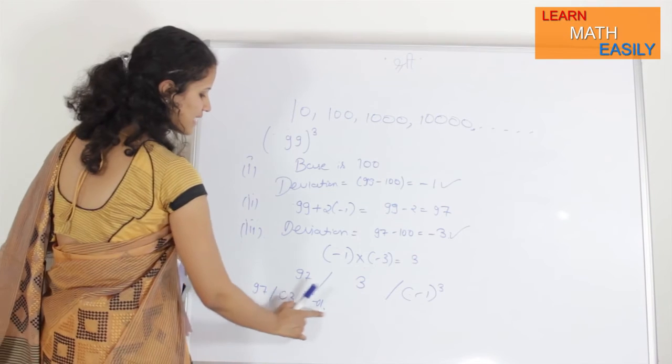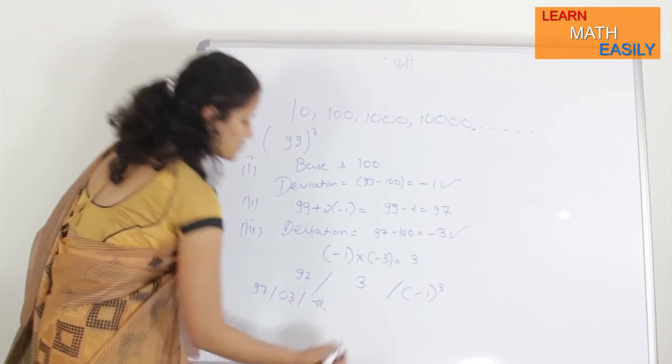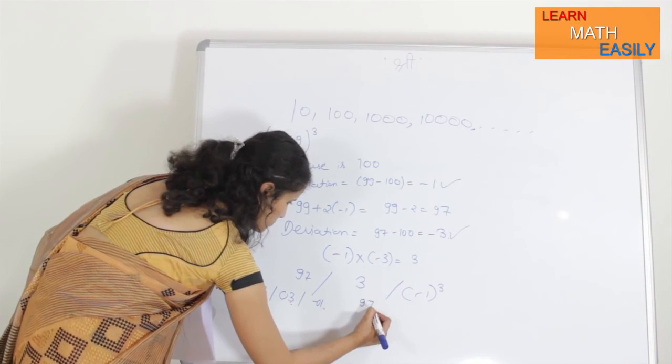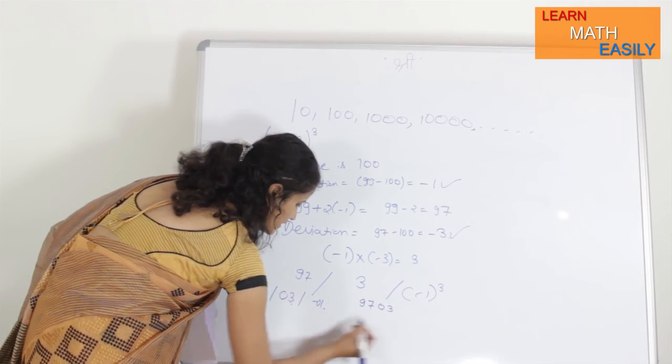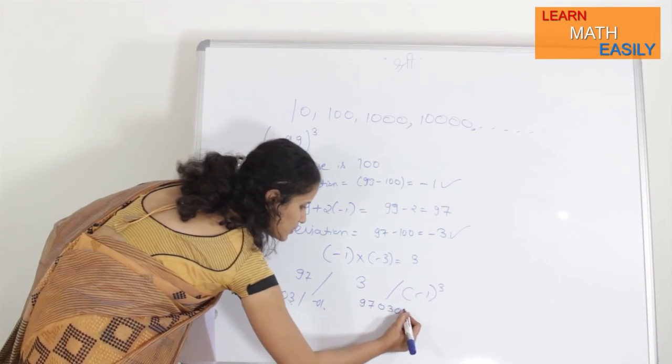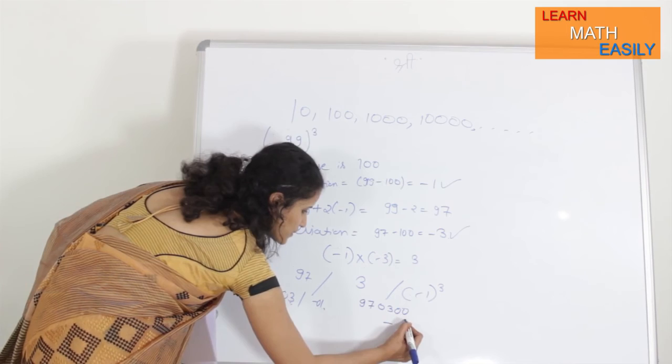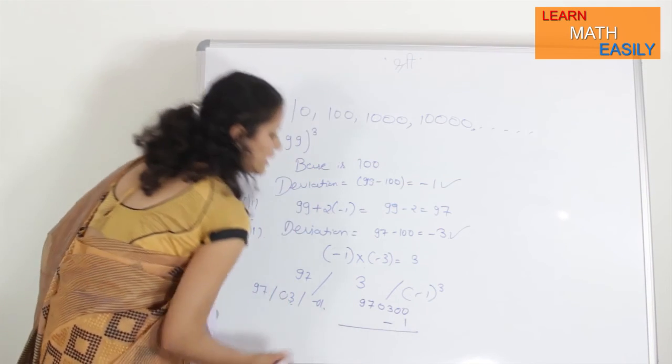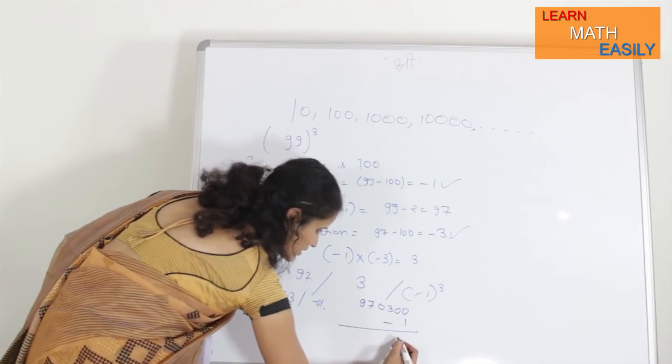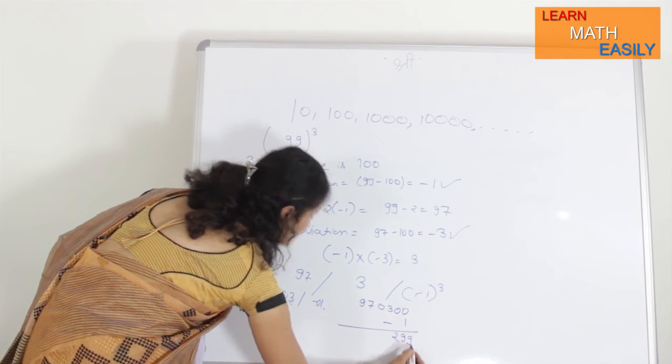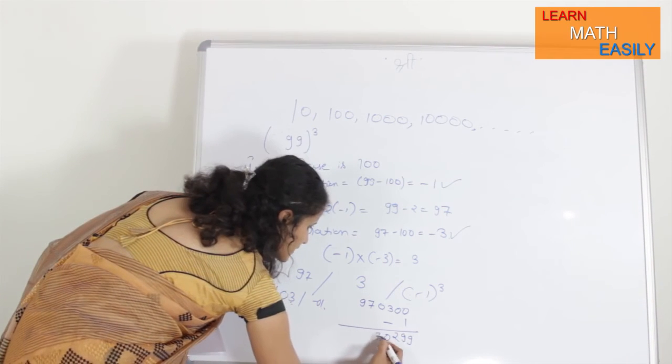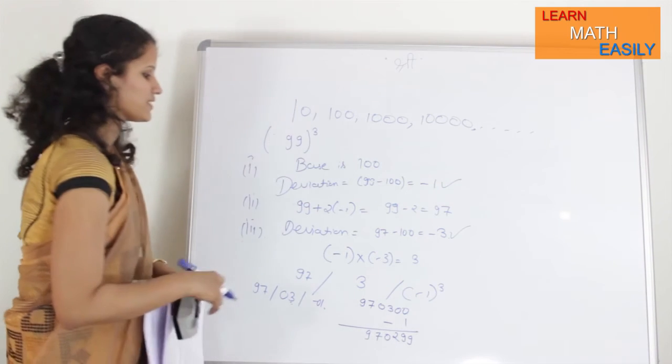But, this side can never be negative. So, what you have to do, you have to put 97, 03. After that, 00, minus 1. So, your answer is 970,299. This is your final answer.